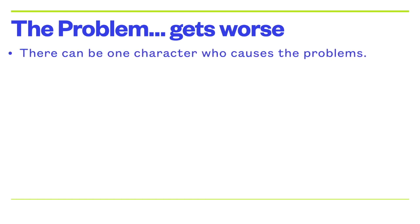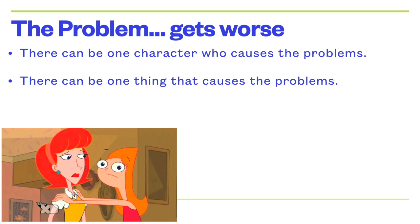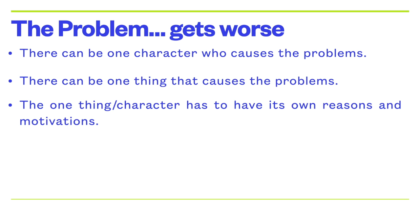You can also make the problem get worse because there's one single character who causes all the problems. In Phineas and Ferb, they just go about minding their own business, and Candace is the one who causes all the problems — she says she's going to stop this, fix this, make Jeremy like her. Her own problems cause problems for other people, and the audience just laughs. And Doofenshmirtz makes inventions, and those inventions are usually the one thing that causes problems in the story. Each character has to have their own reasons, motivations, and problems in order to move the story along.